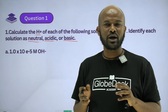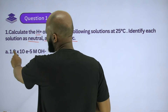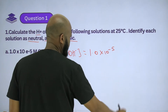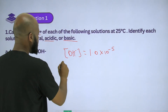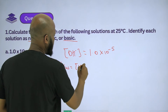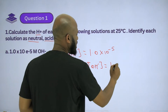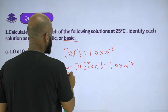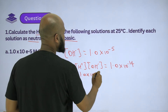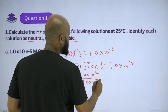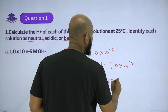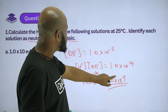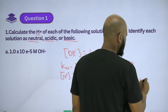The concentration of hydroxide is 1.0×10⁻⁵. So here, Kw is equal to the concentration of H⁺ times the concentration of OH⁻, which is 1.0×10⁻¹⁴. The concentration of H⁺ is equal to 1.0×10⁻¹⁴ divided by 1.0×10⁻⁵, which equals 1.0×10⁻⁹. So the hydronium ion concentration is 1.0×10⁻⁹, and this solution is a basic solution.